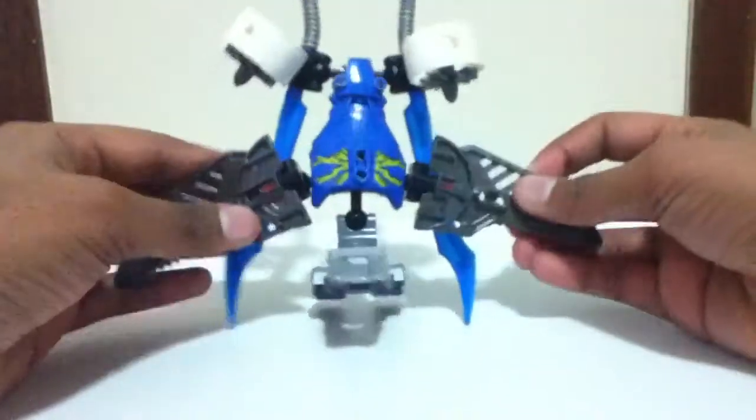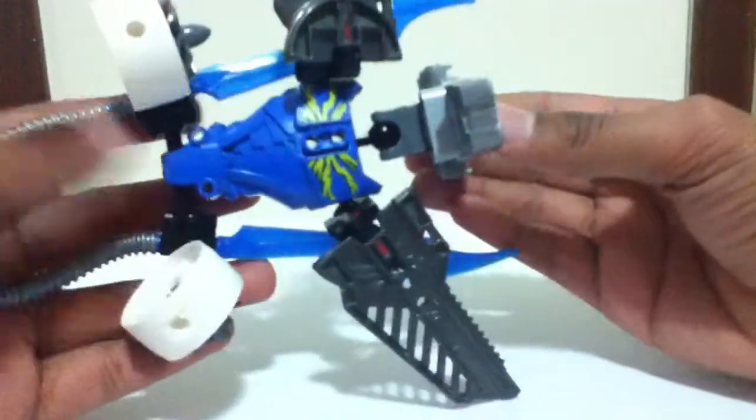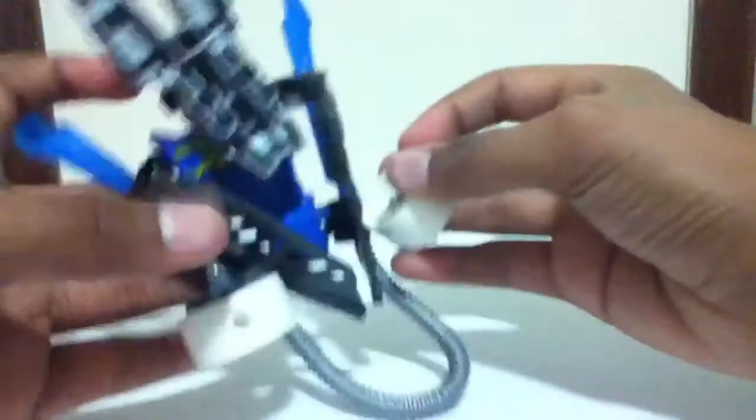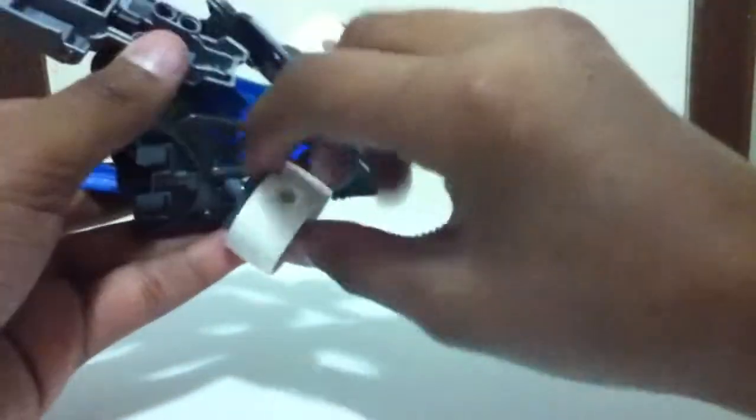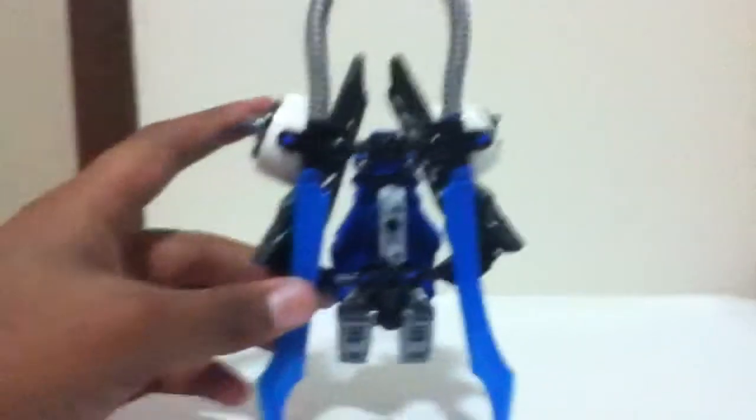So yeah, that's actually pretty much it for how to build this. And when you attach this to blade, when he's not using it, just fold the foot up, fold these wings in so that they look like that, and then fold the turbines in so it looks like that. So it looks like that all in all. And yeah, that's it for how to build this.